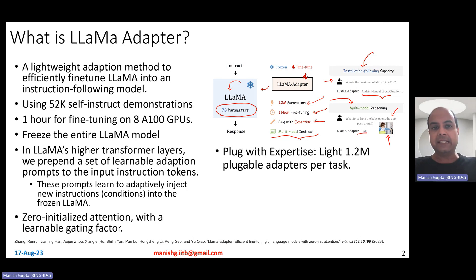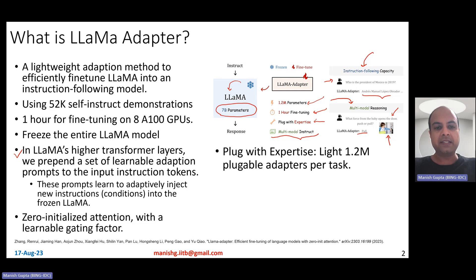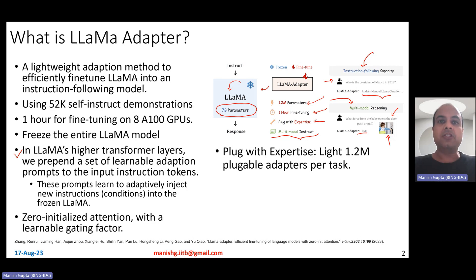The way this adapter works is that in LLaMA's higher transformer layers, you prepend a set of learnable adaptation prompts to the input instruction tokens. It is very much like prefix tuning to some extent, but somewhat different because in prefix tuning methods you either include learnable parameters only in the embedding or through the entire transformer network. These authors do it in the last L layers, and these prompts learn to adaptively inject new instructions or conditions into the frozen LLaMA model. Unlike prefix tuning methods, they also have a specific gating mechanism and a zero-initialized attention.